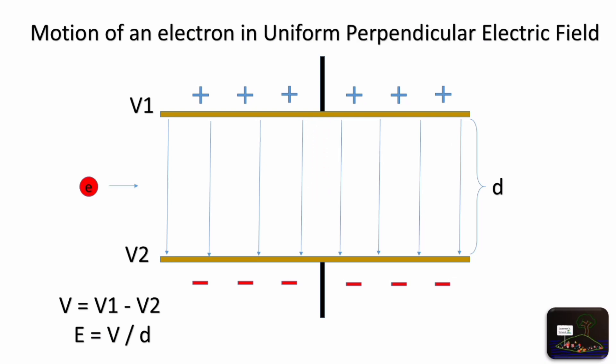Now consider the second case: uniform perpendicular electric field. Here the electron will be inserted from a side at right angles to the electric field. The electron on entering the potential field follows a parabolic path towards the positive plate.